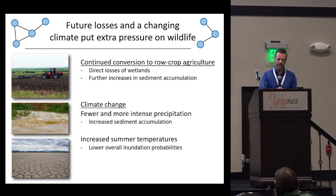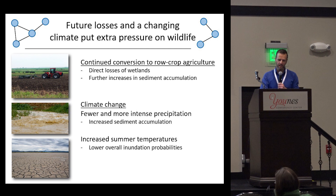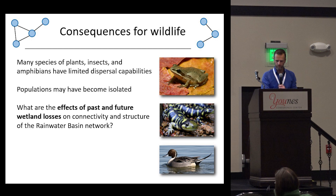Future losses and changing climate are going to put extra pressure on wildlife and the system in general. We see continued conversion to rural crop agriculture, leading to more direct losses and further increases in sediment accumulation. Climate change is bringing fewer but more intense precipitation events, potentially increasing sediment accumulation and lowering overall inundation probabilities. This will have consequences for wildlife, as many species of plants, insects, and amphibians have fairly limited dispersal capabilities, and if too many wetlands disappear, populations may become isolated.